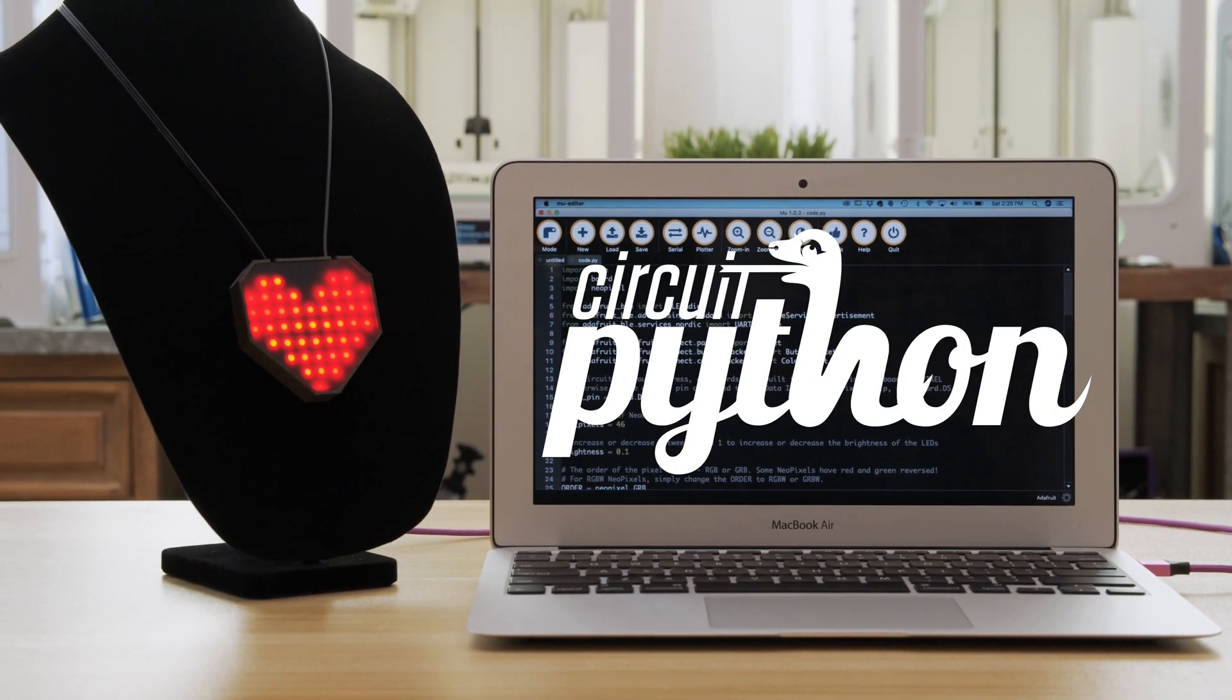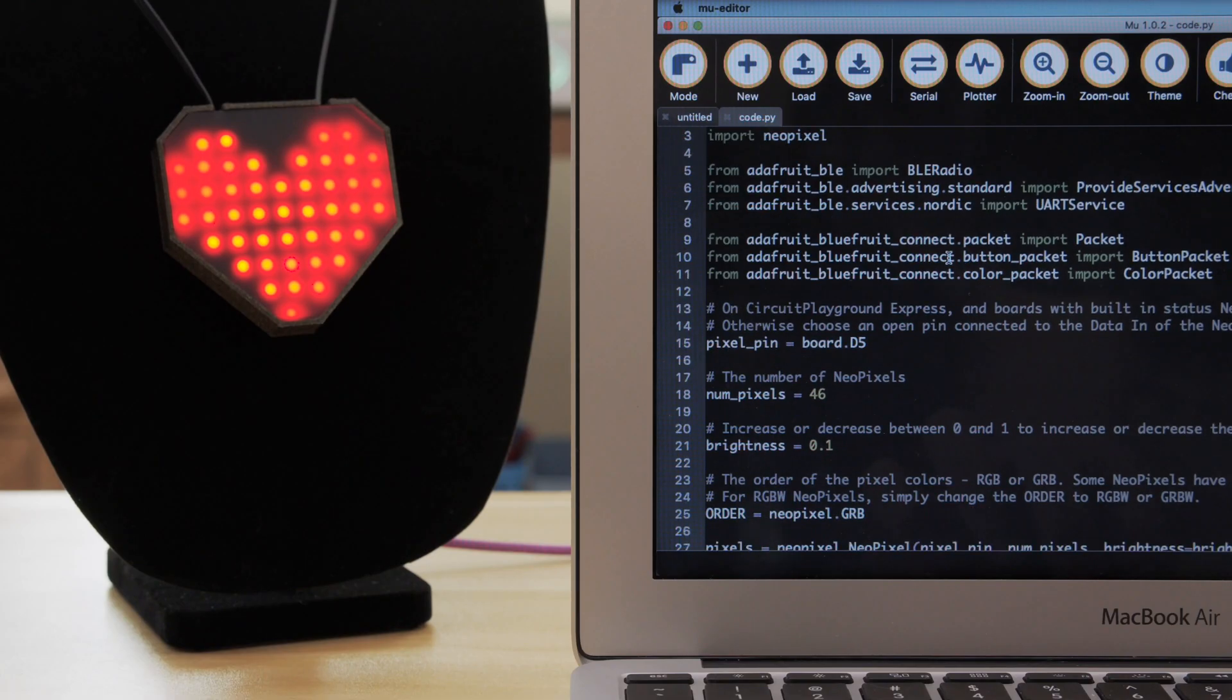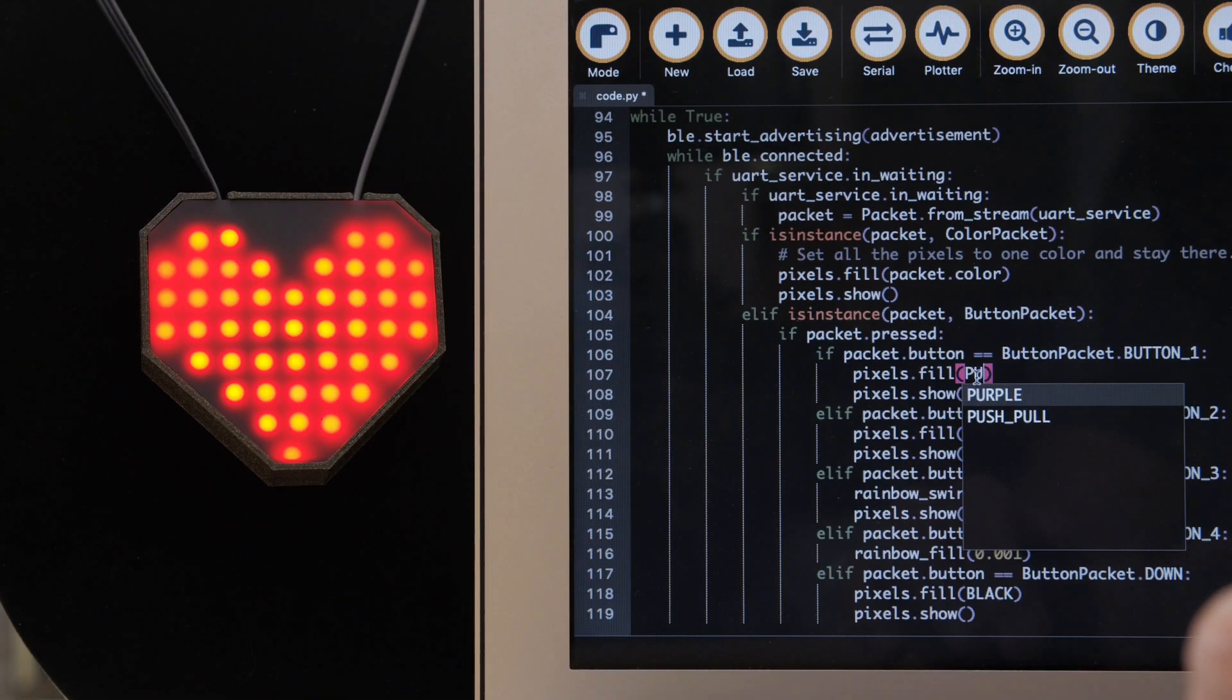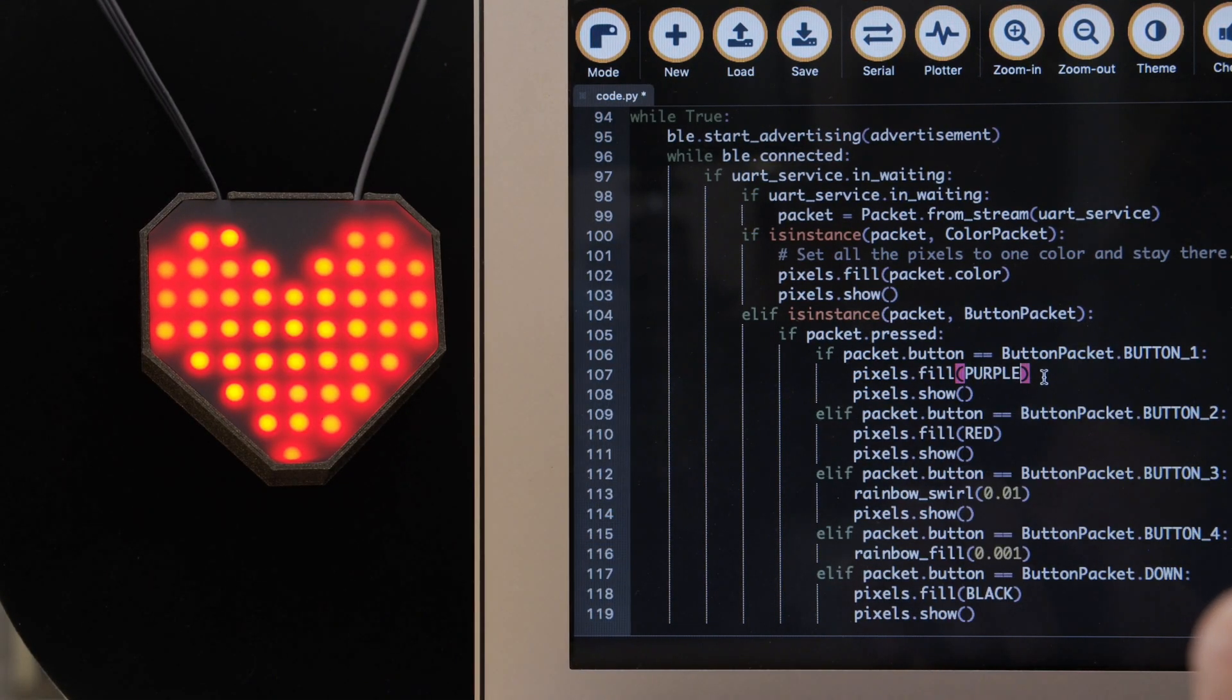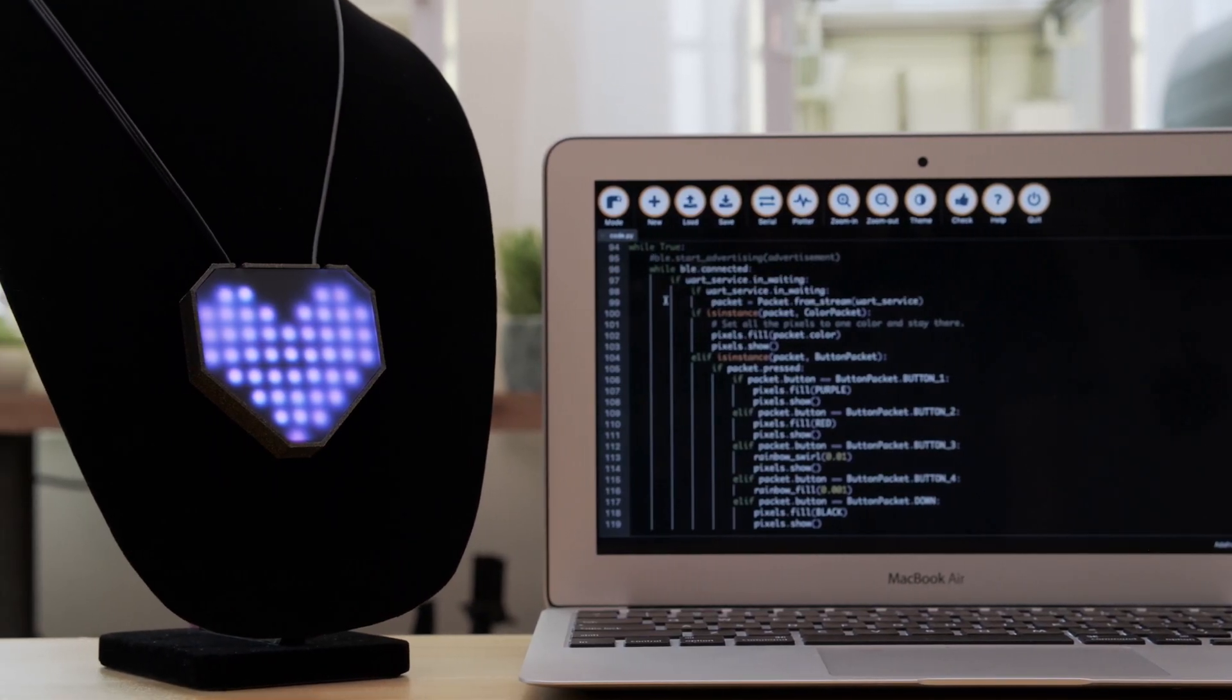The code for this project is written in CircuitPython and it uses Adafruit's BLE libraries. With CircuitPython you can easily make updates and quickly iterate on your code. You can change the colors or add your own to the different buttons in the BLE Connect app. We think this is great demo code for folks looking to quickly get their projects up and running.